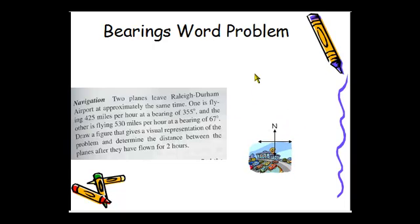So for the first one at a bearing of 355 degrees, we would start going around the circle. 355 degrees is just short of all the way around which would be 360. That gives us that this little angle in here is five degrees. Our second plane, we go 67 degrees to the right of north and put our second airplane.